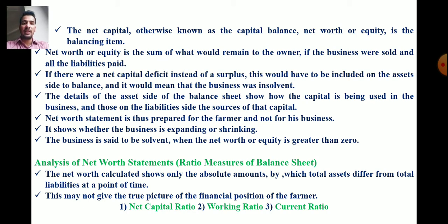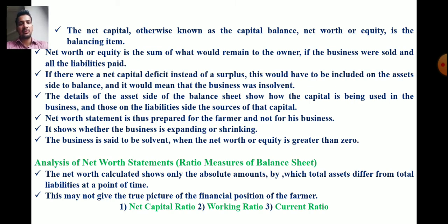For analysis of the net worth statement, there are three ratio measures: net capital ratio, working ratio, and current ratio. Net worth calculated shows only the absolute amounts by which total assets differ from total liabilities, so these three ratios provide a more complete analysis.